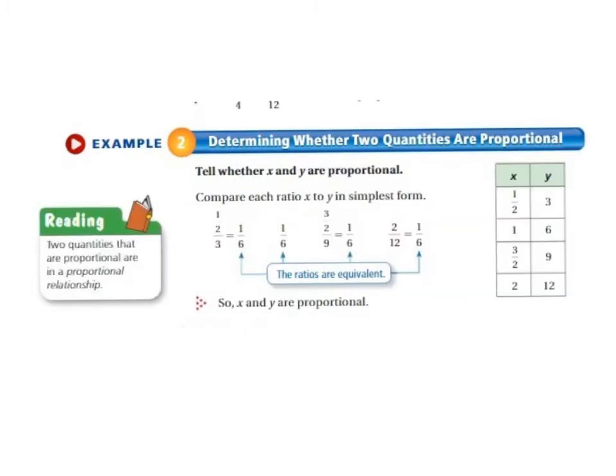Now we're going to look at whether two quantities are proportional. This is example 2. And let's take a look at the note over here. Where it says that two quantities that are proportional are in a proportional relationship.